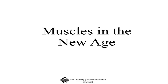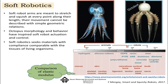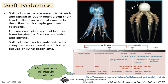Looking at new developments, a new branch called soft robotics is fast expanding. Under soft robotics, robotic arms are meant to stretch and squeeze at every point along their length. Their movement cannot be described with simple geometric relations because it involves large deformation motion — much unlike the way we handle rigid robot systems using kinematic chains.